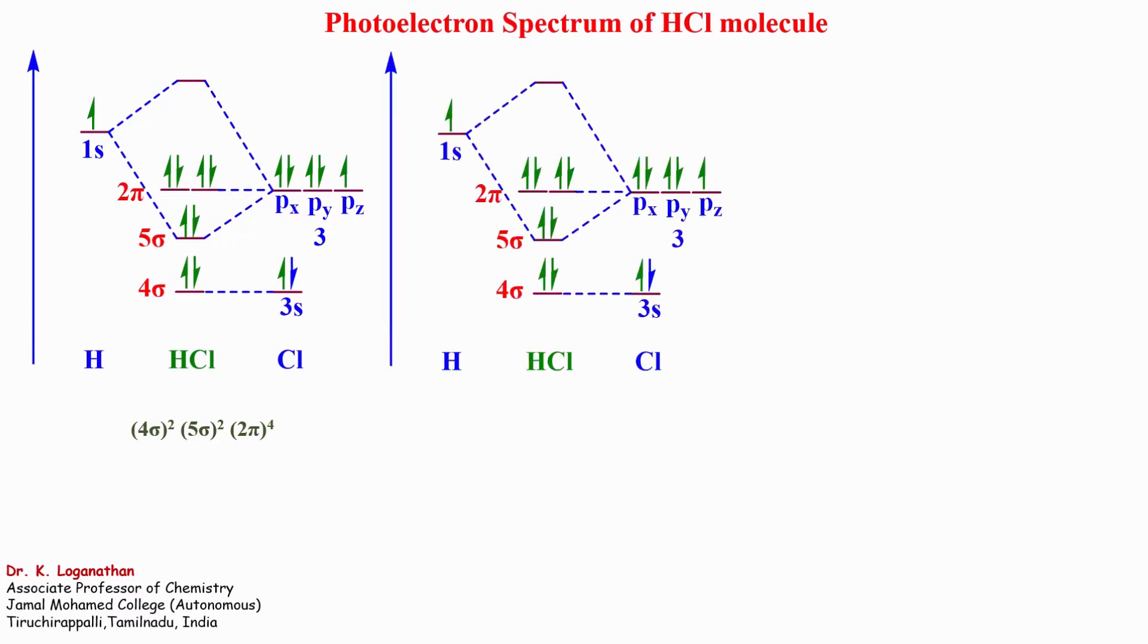In photoelectron spectroscopy, the removal of an electron from the outer valence molecular orbital 2π leads to 2π ground state of hydrochloric acid plus ion and gives a band at 12.74 electron volts with negligible vibrational structure, indicating that 2π orbital is non-bonding.